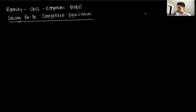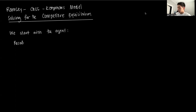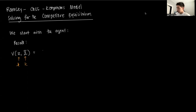We start with the Bellman — specifically the agent's or consumer's Bellman. Recall from the previous video that the Bellman is a function of the individual state and the aggregate state X. The individual state is just k (small k), and the aggregate state is capital K.